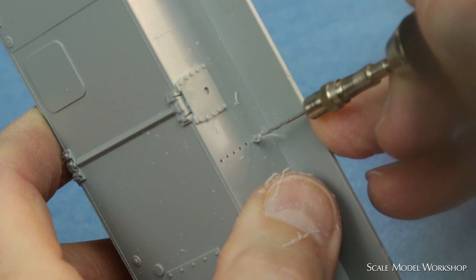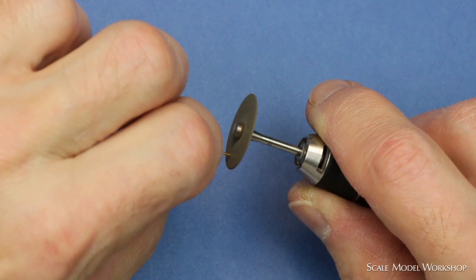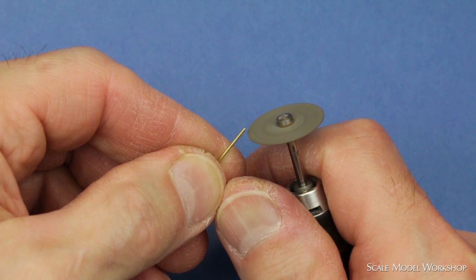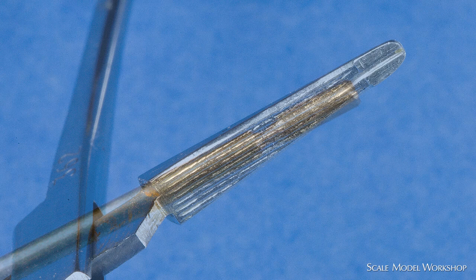The first step in making the rivets is to flatten off the end of a length of wire by rotating the end against a separating disc. Then follow it up with a quick pass to radius the end. Then place the wire at an angle against the edge of the disc and rotate. This forms a taper while it almost cuts through the wire.